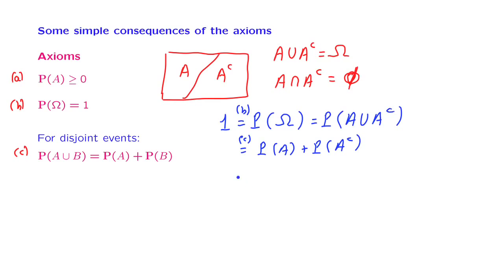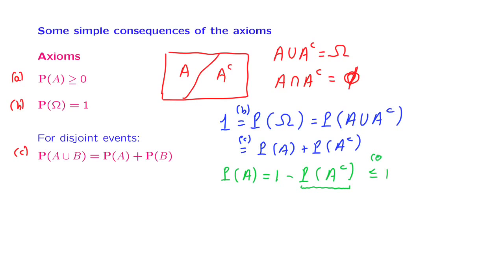Based on this relation, we can also write that the probability of event A is equal to 1 minus the probability of the complement of that event. And because by the non-negativity axiom this quantity is non-negative, 1 minus something non-negative is less than or equal to 1. We have thus established that probabilities are always less than or equal to 1.